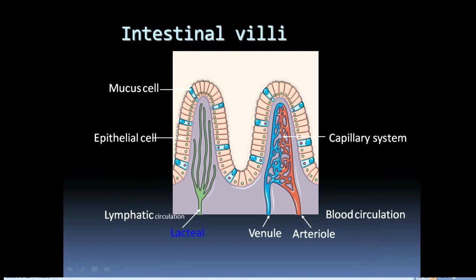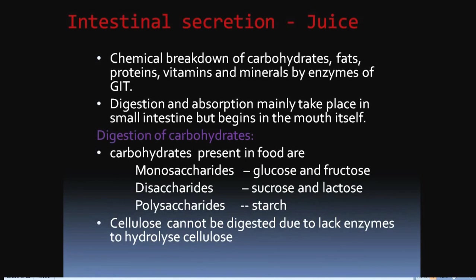The intestinal villi consist of different cellular structures including mucus cells, epithelial cells, lymphatic circulation, arterioles, and venules. The blood circulation pattern and capillary system are shown in this figure. Intestinal secretion, or succus entericus, is the juice involved in the chemical breakdown of carbohydrates, fats, proteins, vitamins, and minerals by the enzymes of the GIT.